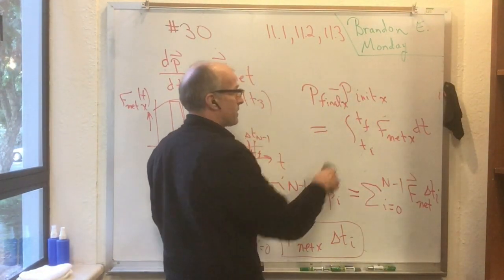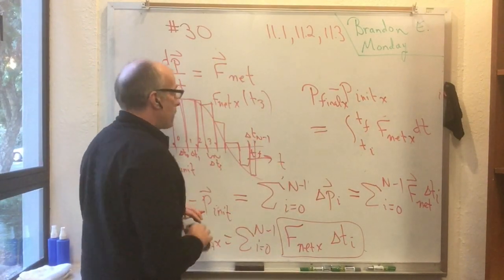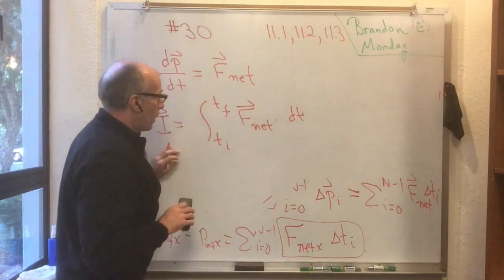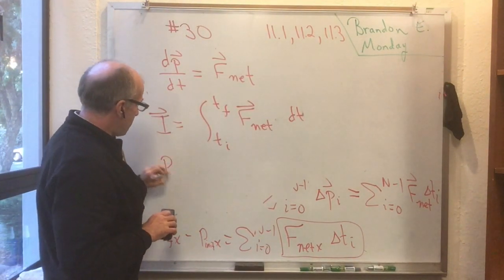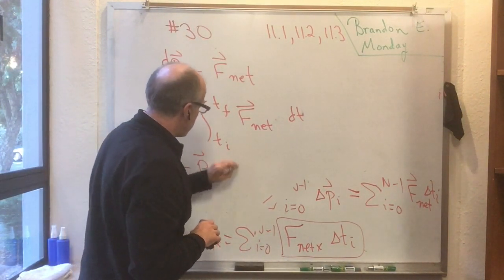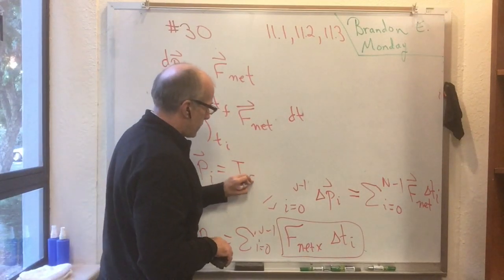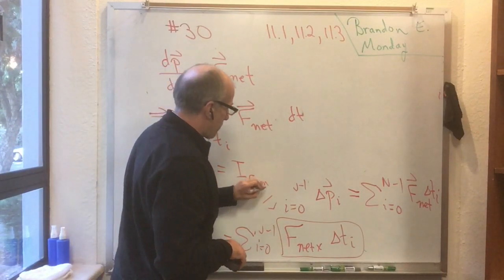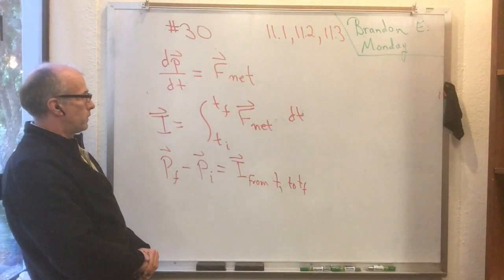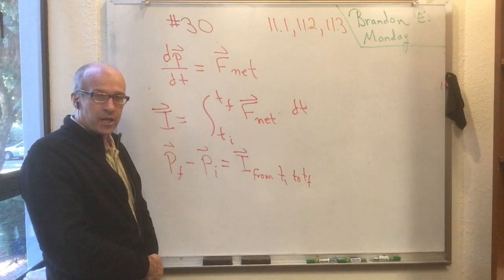Okay, now this thing on the right-hand side, because it's so useful, we have a name for it. It's called the impulse. So what we've shown, then, is that p_final for a particle minus p_initial for a particle is equal to the impulse. And I should say, of course, this is the impulse calculated from t_initial to t_final.